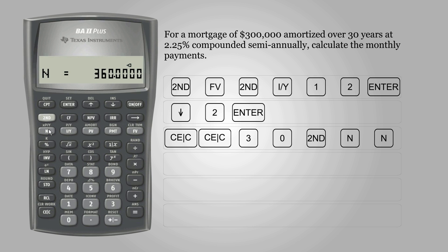For interest rate, enter 2.25 and IY. Finally, enter $300,000 and PV for present value.